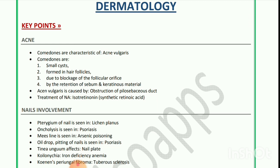Welcome back to my channel Miss Medicine. This is the quick review of dermatology. First is acne — comedones are characteristic of acne vulgaris. Comedones are small cysts formed in hair follicles due to blockage of the follicular orifice and by the retention of sebum and keratinous material. Acne vulgaris is caused by obstruction of the pilosebaceous duct.